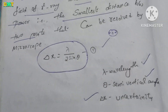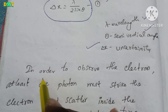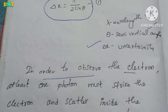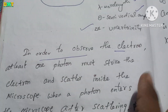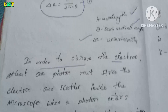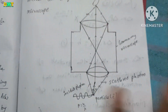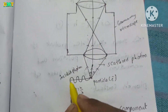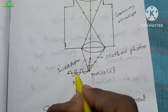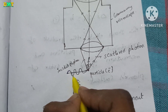In order to observe the electron, we have to take a picture. Taking a picture — if you look at the picture, this involves a photon. We have to look at it — this photon has wave nature.